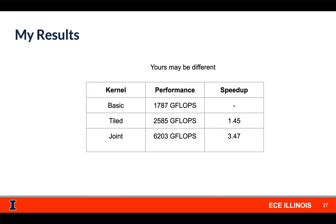Running three different matrix multiplications — the basic one, the tiled one, and the joint one — these are the numbers we get. You can see a small speedup from using shared memory, which may seem disappointing compared to what was discussed in lecture. Profiling can help us understand why. The joint matrix multiplication is really much faster, and hopefully by the end of the lecture you'll be well equipped to figure out why, if you're curious enough to explore it.